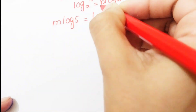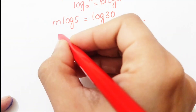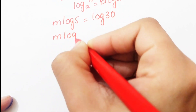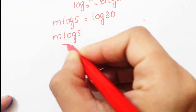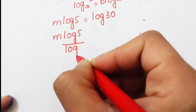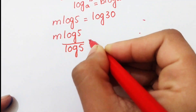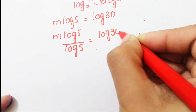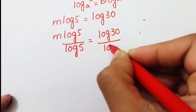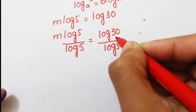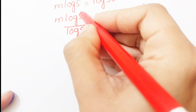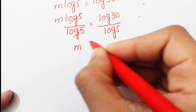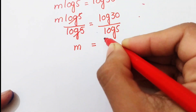Now we divide both sides by log5. The form becomes m·log5 over log5 equals log30 over log5. These terms cancel each other, and here only m remains, so m equals log30 over log5.